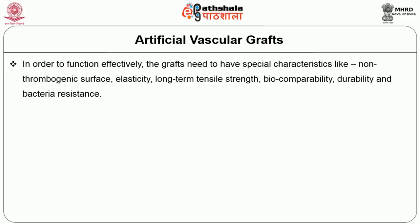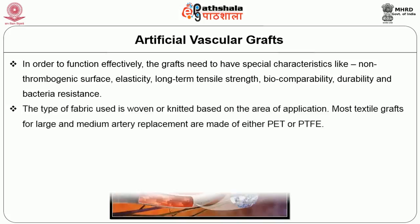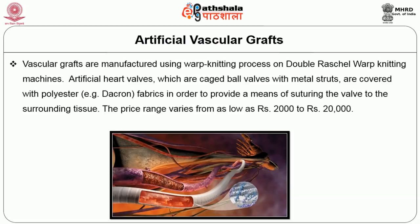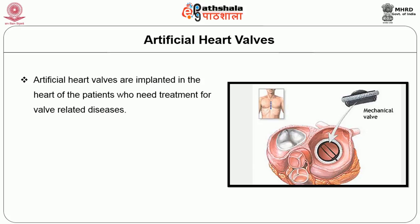In order to function effectively, vascular grafts need to be specially characterized as non-thrombogenic, with elasticity, long-term tensile strength, biocompatibility, durability, and bacteria resistance. Most textile grafts are large or medium artery replacements made of either PET or PTFE, manufactured using warp knitting machines on double-raschel warp knitting machines. Artificial heart valves are cage-ball valves made with metal stents and covered with polyester fabrics to provide a means for suturing the valve to the surrounding tissue. The price ranges from as low as Rs. 2000 to Rs. 20,000.